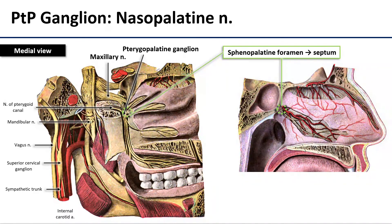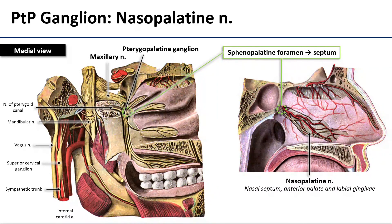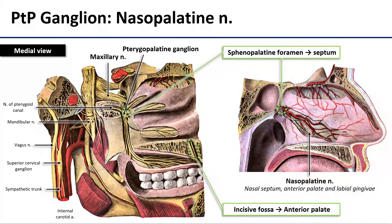To get into the nasal cavity, the nasopalatine nerve is going to pass through the sphenopalatine foramen on the medial wall of the pterygopalatine fossa. From there, it jumps over to the nasal septum and travels anteriorly and inferiorly toward the floor of the cavity. Once it reaches the floor, it tunnels through the hard palate to reach the oral surface, where it supplies the mucosa of the anterior palate, including the gingiva. Its territory can be variable with some overlap with the greater palatine nerve posteriorly, but it typically extends back to about the canines.